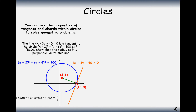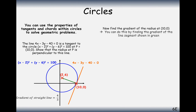Now let's find the gradient of the green line. Well, the green line doesn't have an equation — the blue line has an equation, that's the circle, but not the green line. However, it does have a pair of coordinates. So what we can do is find the gradient between those two coordinates using the formula m = (y₂ - y₁) / (x₂ - x₁).